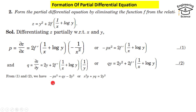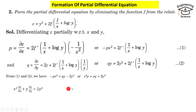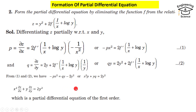From equations one and two, we have minus px squared equal to qy minus 2y squared, or x squared p plus yq equals 2y squared. Since p equals partial z with respect to x and q equals partial z with respect to y, this is the partial differential equation of the first order. That's all — I hope it can be helpful. Have a nice time.